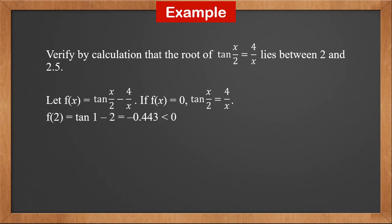f(2) = tan(1) - 2. Remember to use radian mode on your calculator. The result is -0.443, which is less than 0. f(2.5) = tan(1.25) - 1.6 = 1.410, which is greater than 0.